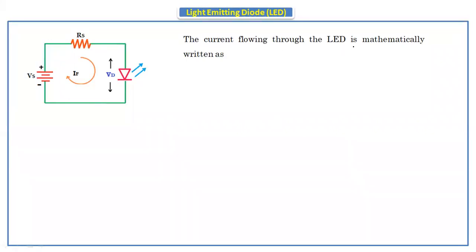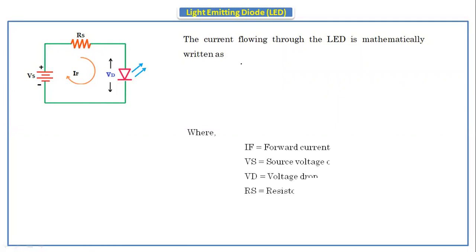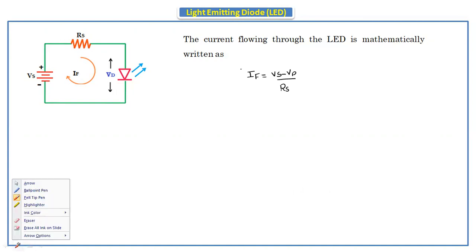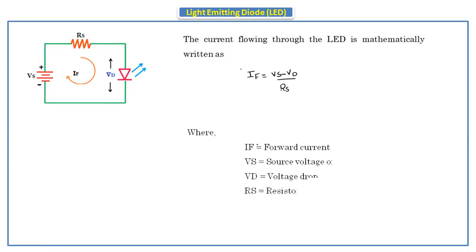The current flowing through the LED is mathematically written as: forward current IF equals Vs minus Vd divided by Rs. Here, IF is the forward current, Vs is the source or supply voltage, Vd is the voltage drop across the LED, and Rs is the current limiting resistor.